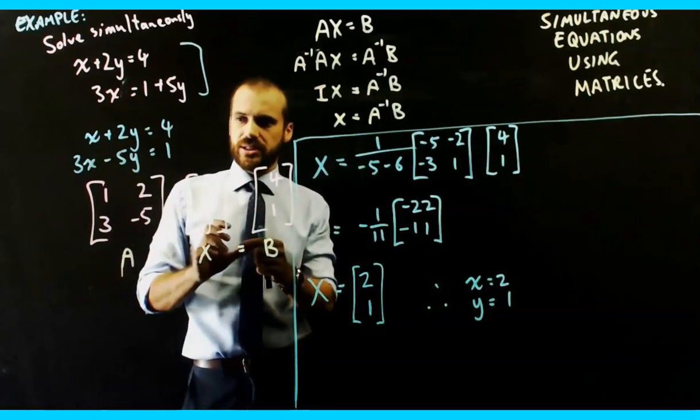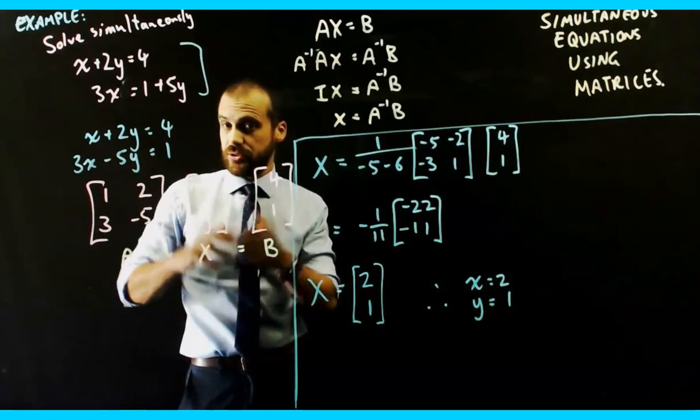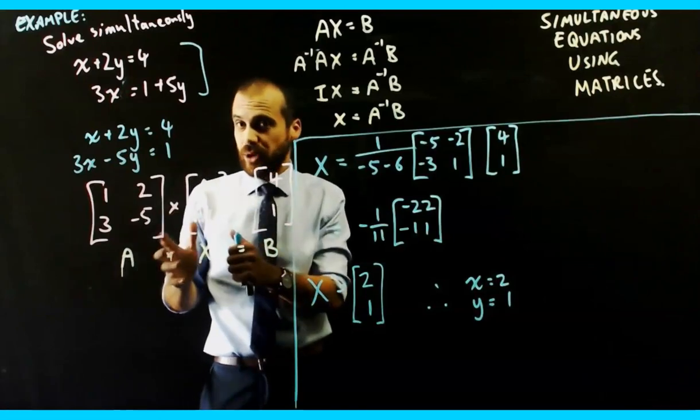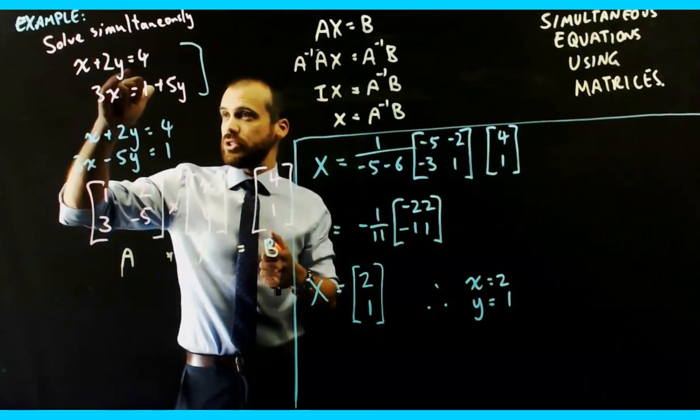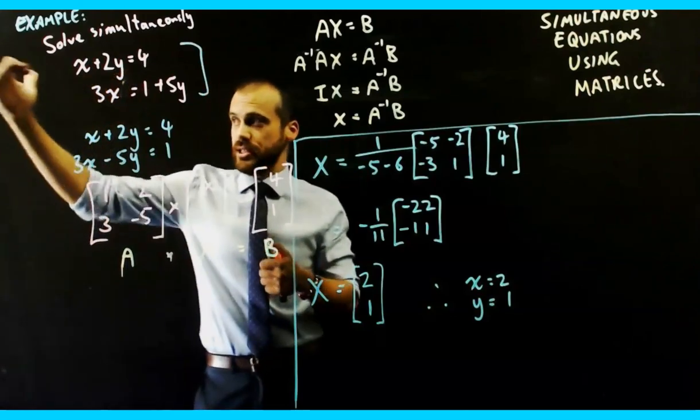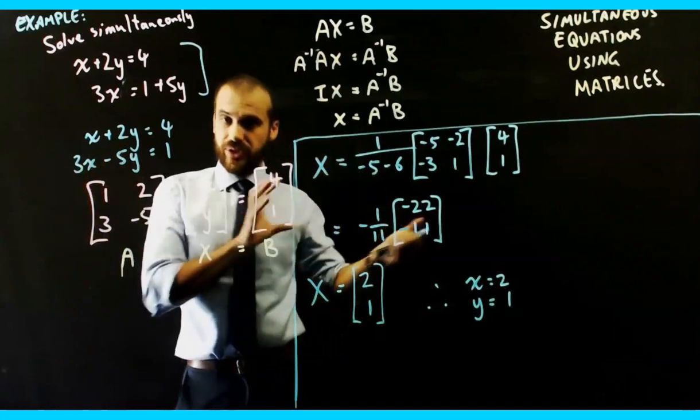As long as you can find the inverse of it, as long as you can do some of this stuff. Now, if this matrix was a 4 by 4 or a 5 by 5 or a 6 by 6 or a 7 by 7 or a 10 by 10 or a 100 by 100, you could solve simultaneously. If you had an equation with 10 variables and you had 10 of those equations, you could use this method.